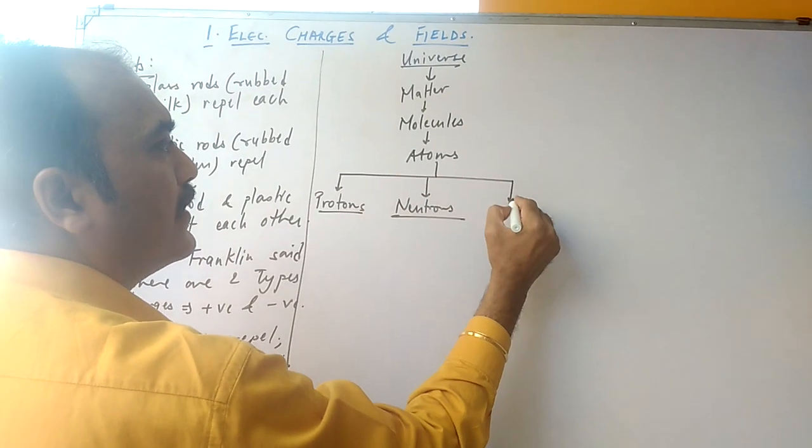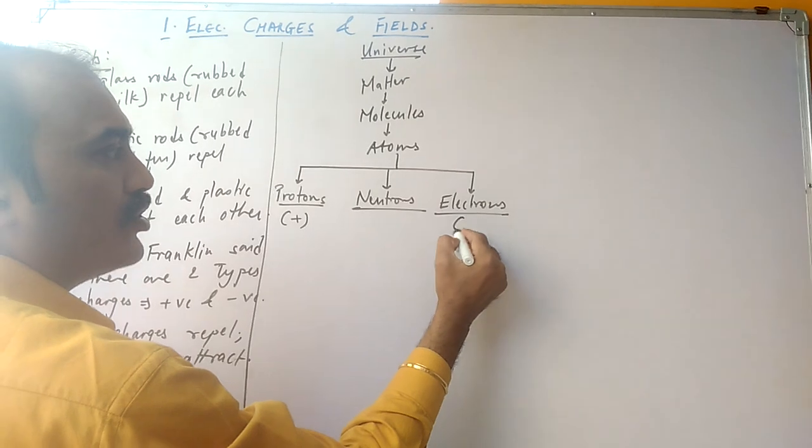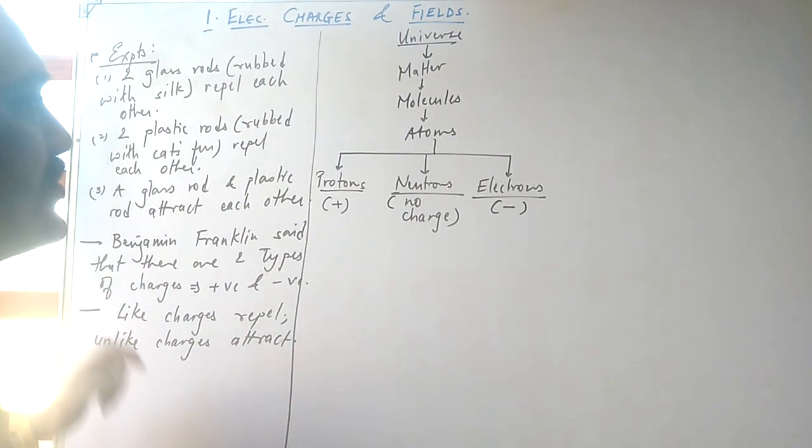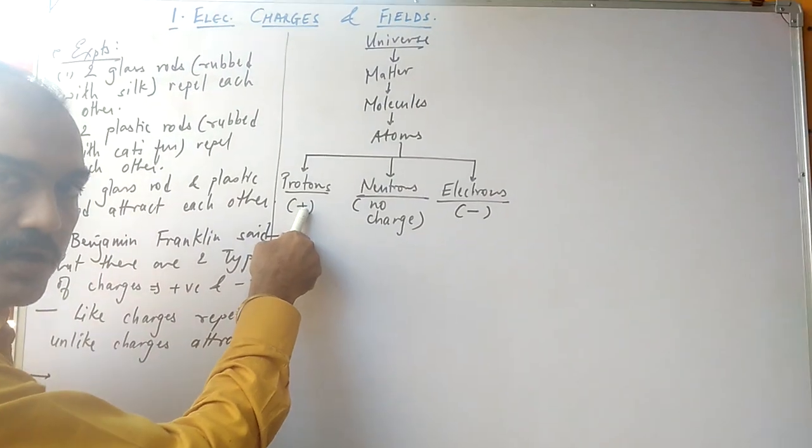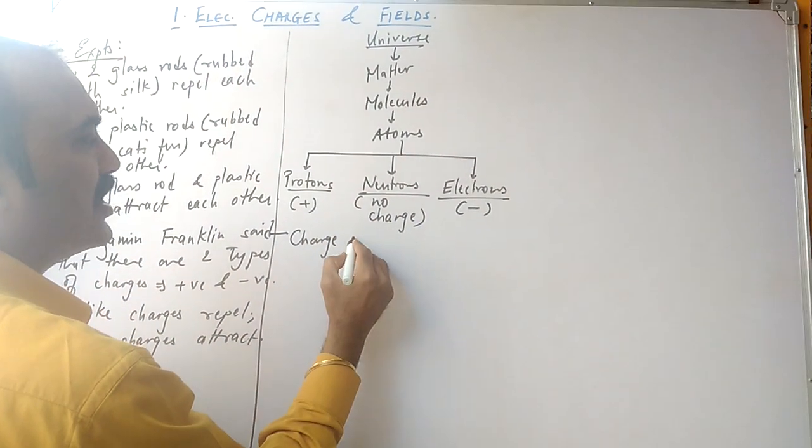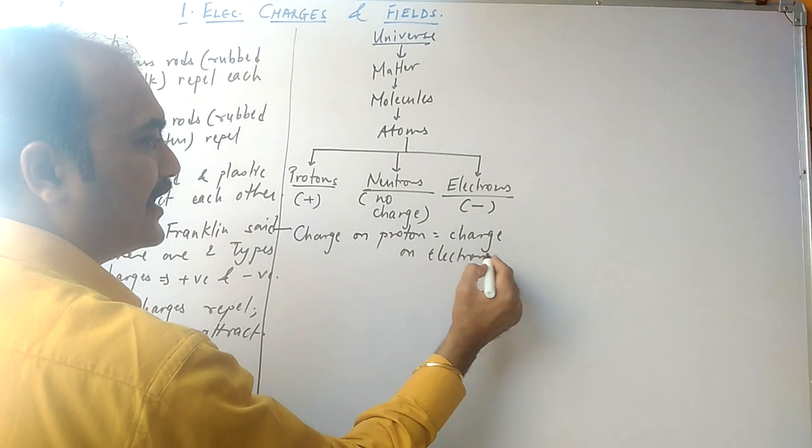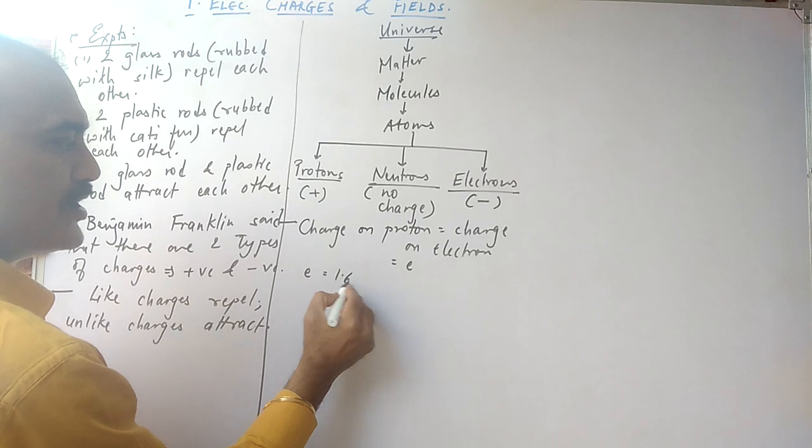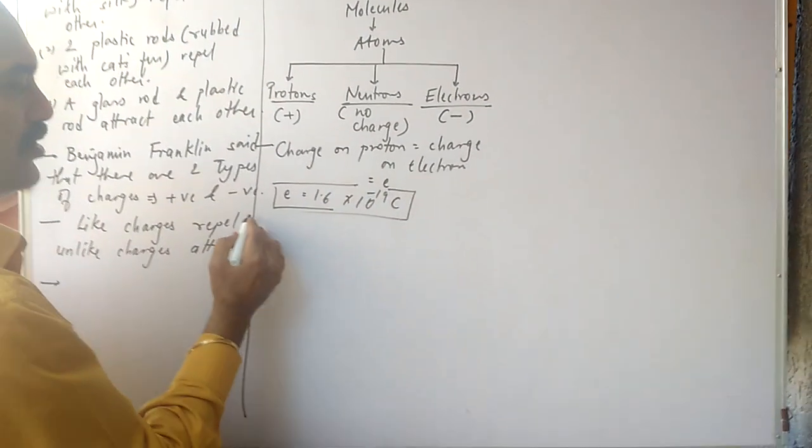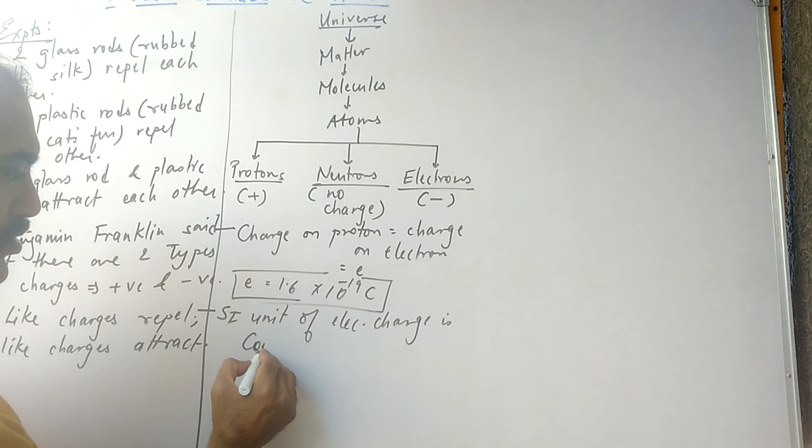neutrons, and electrons. Protons we know are positively charged, electrons are negatively charged, and neutrons do not possess any charge. So we write here no charge. Also, the charge on a proton is same as the charge on an electron, and together they are called e. The small symbol for charge, charge on proton, the magnitude actually is same as charge on an electron, and that is called e. The value of e is 1.6 × 10^-19 coulomb. So for the first time we come across the SI unit of electric charge, which is coulomb.